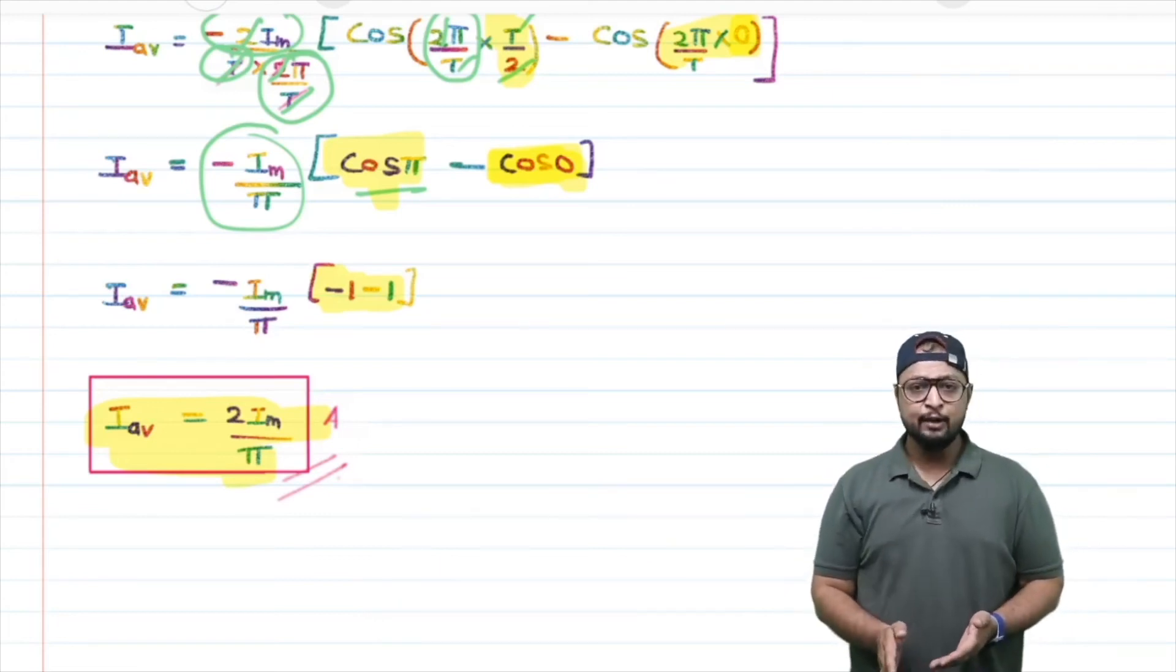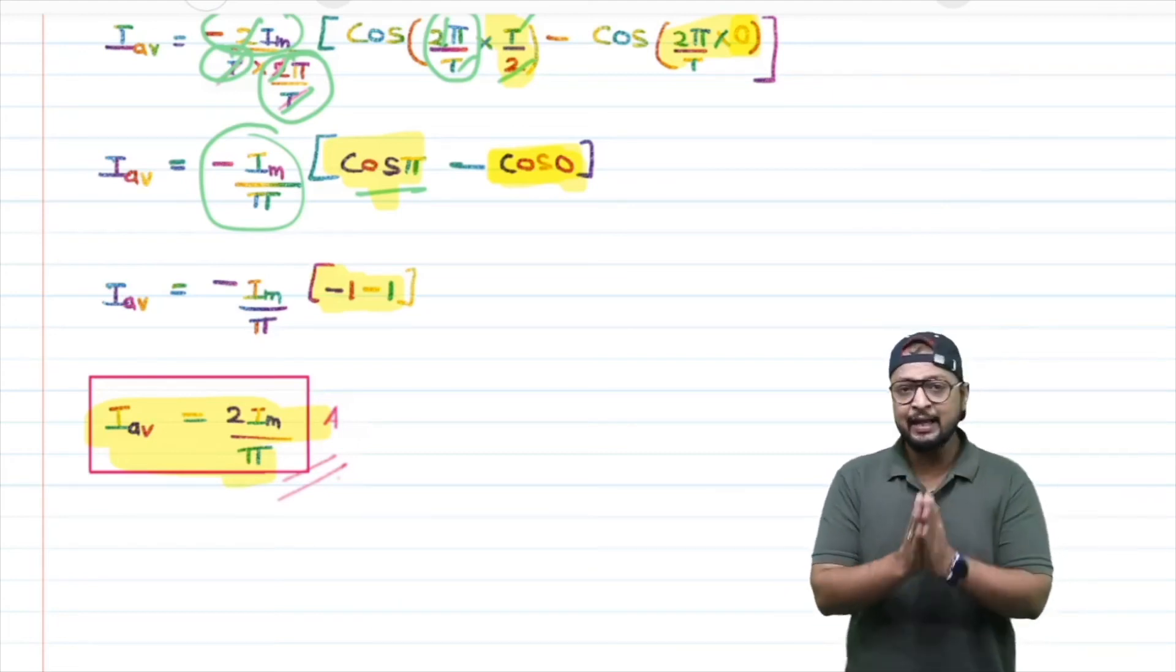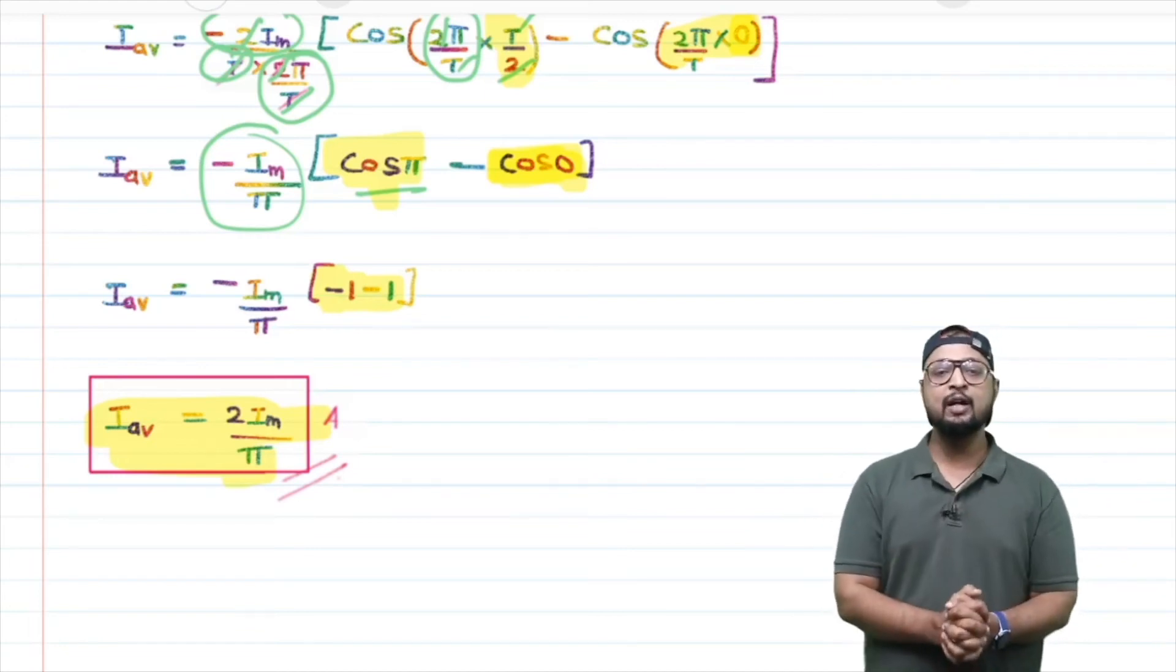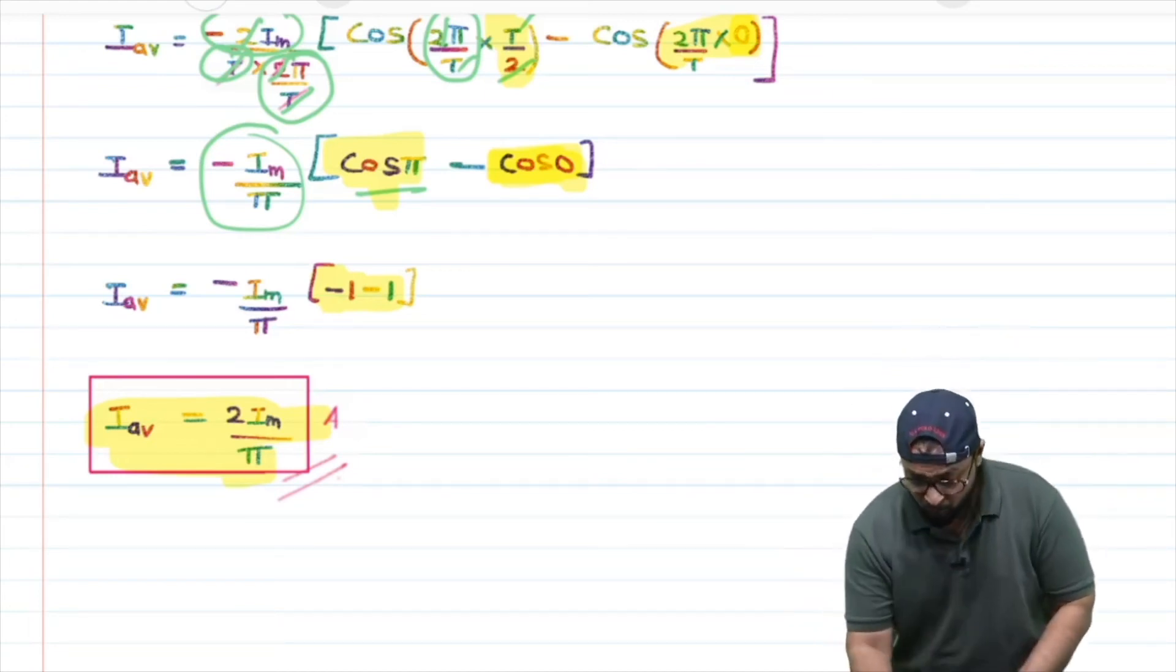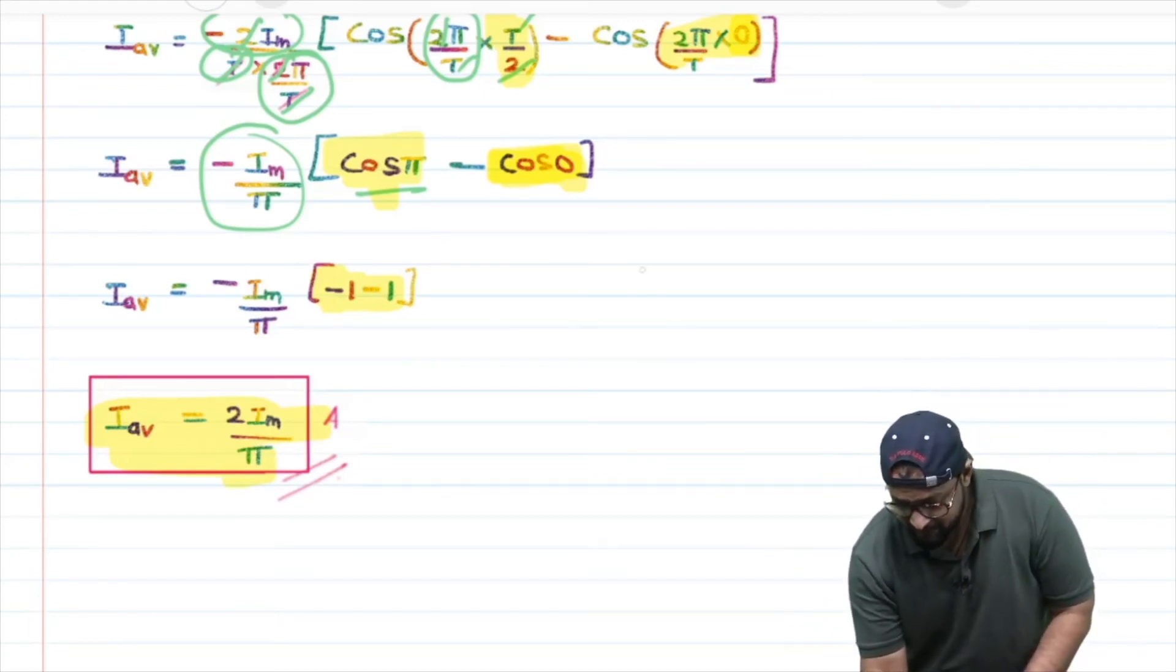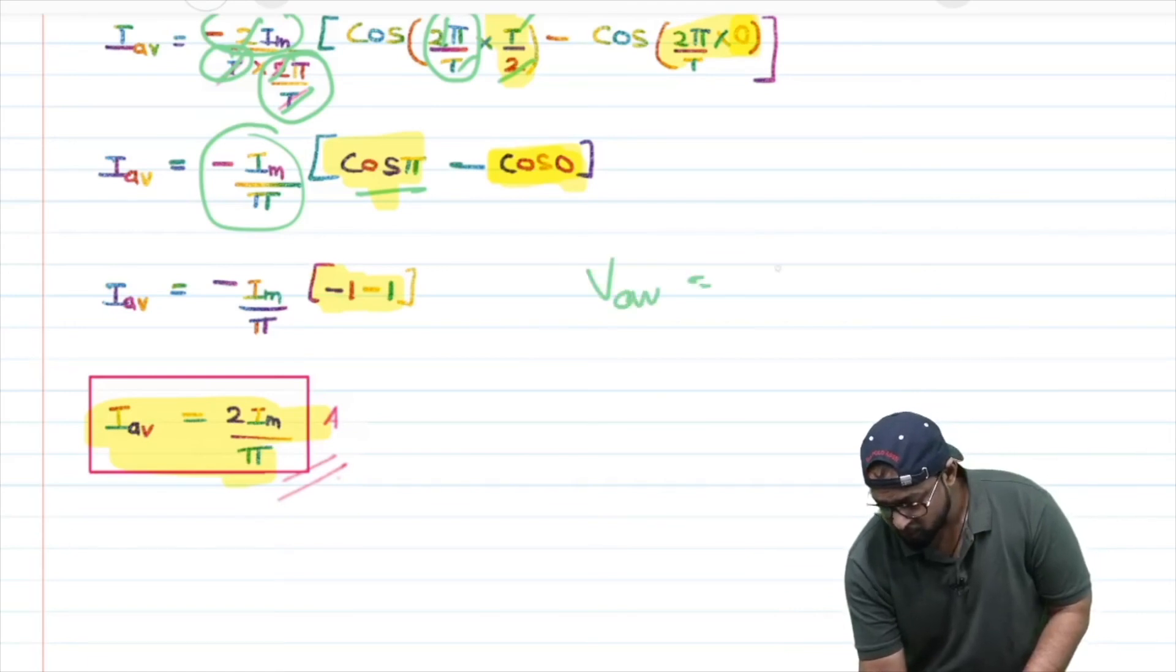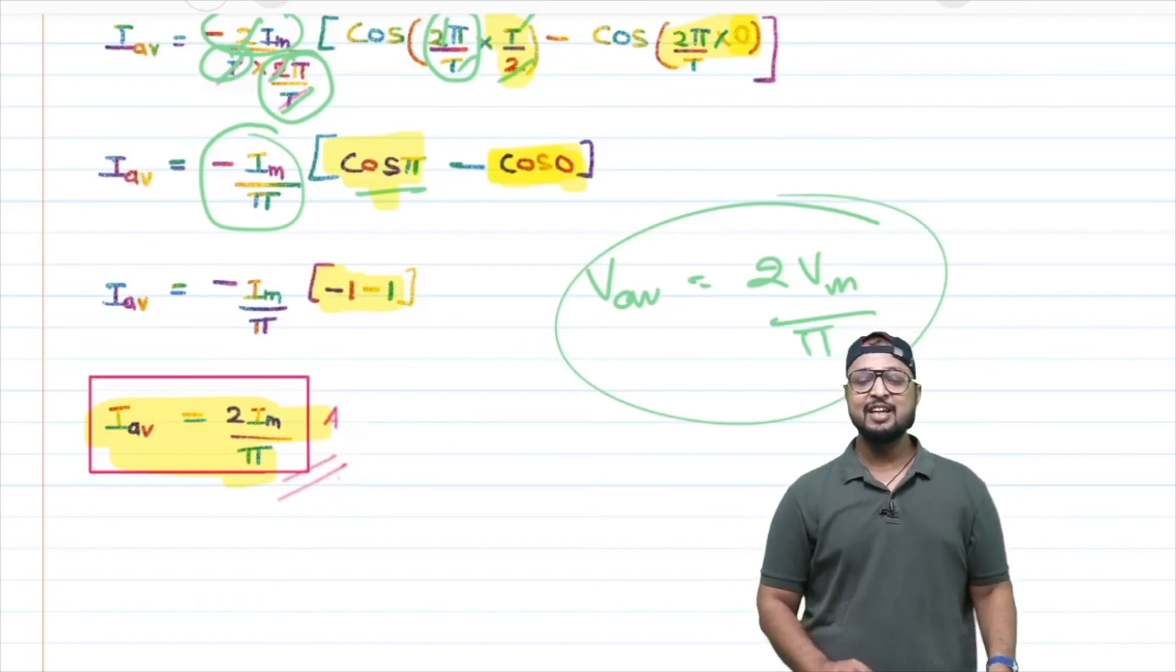...is the average value of AC in a half cycle. This is for current. If this were voltage, you would write V_average equals 2V_m/π. That's it, no other changes.